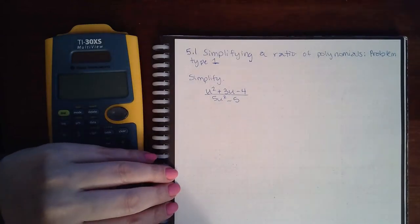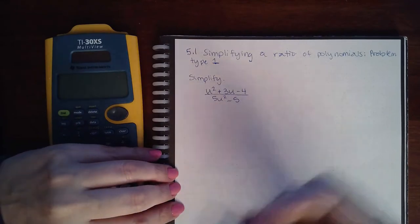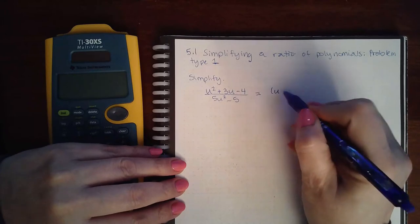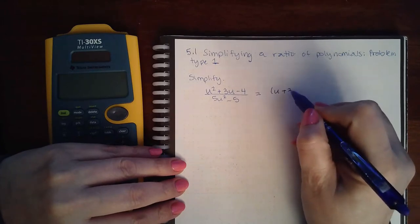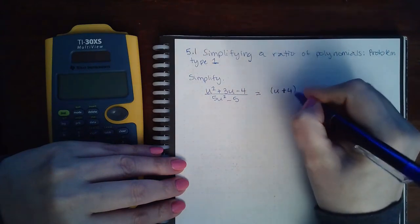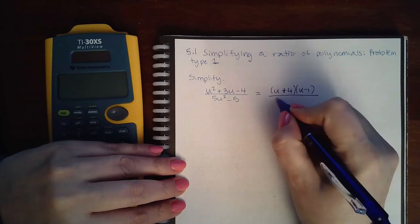Here I have 5.1 simplifying a ratio of polynomials, problem type 1. We do need to factor in order to simplify. So I get u plus 4 times u minus 1 if I factor the numerator.